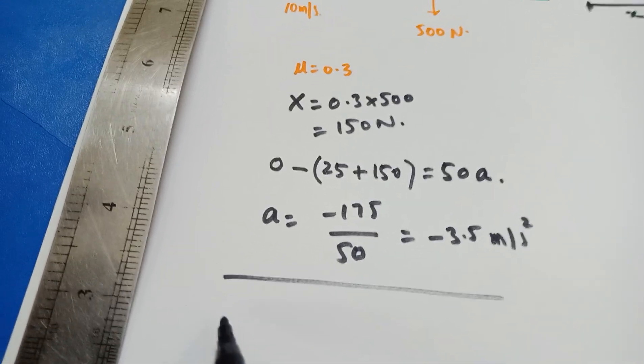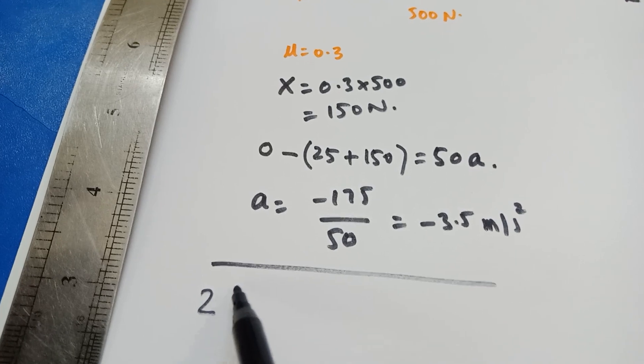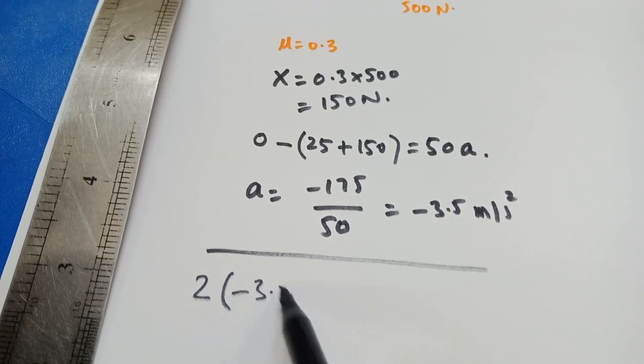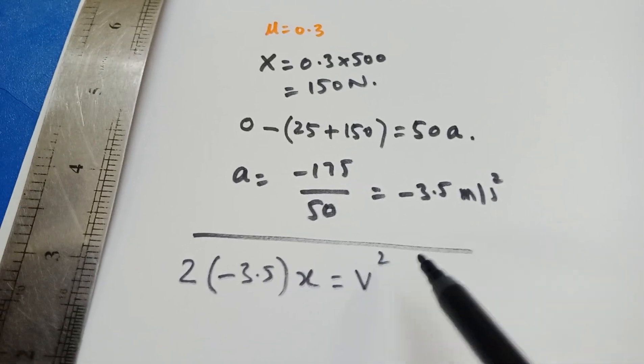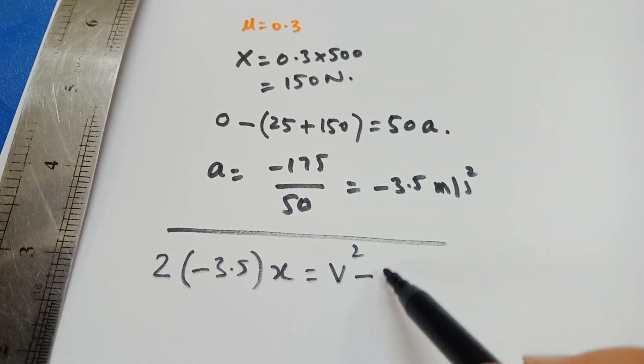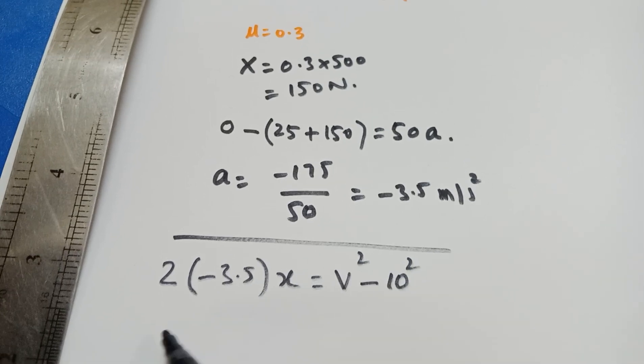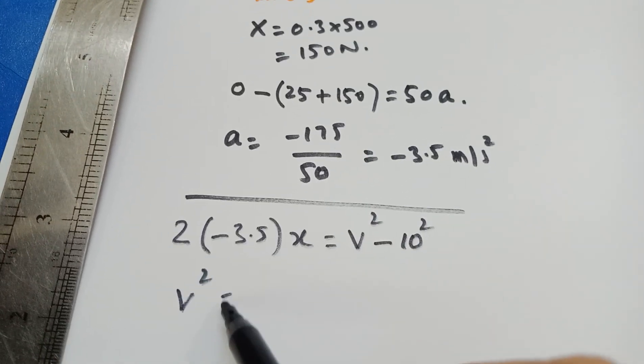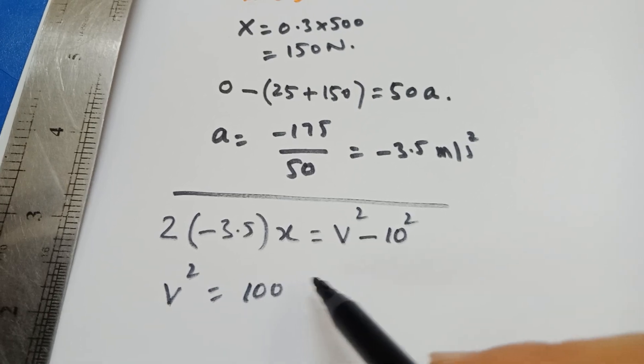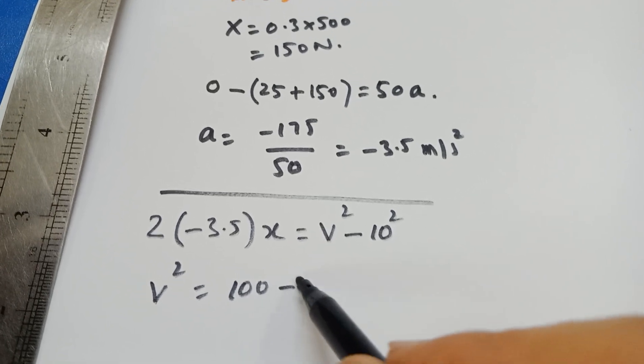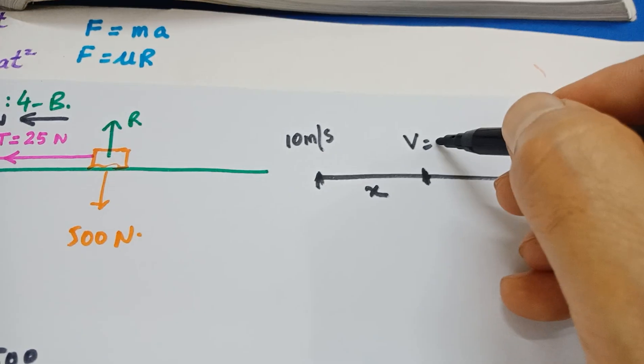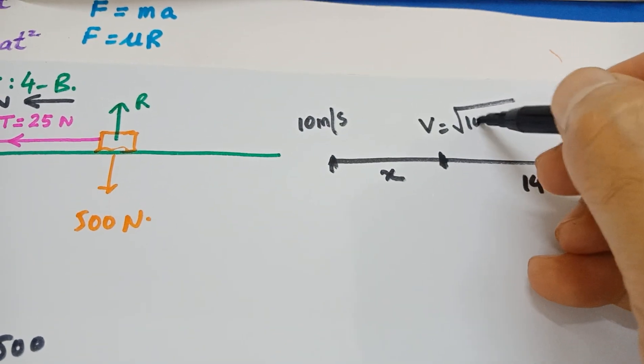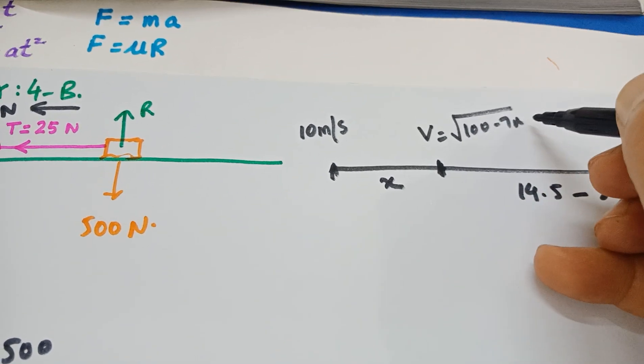Now, we have 2AS, which is X, equal to V square minus U square. That is minus 10 square. So this V square is going to be 100. I'll just keep it like this, 100 minus 7X. So, guys, here, the speed is going to be the square root of 100 minus 7X.